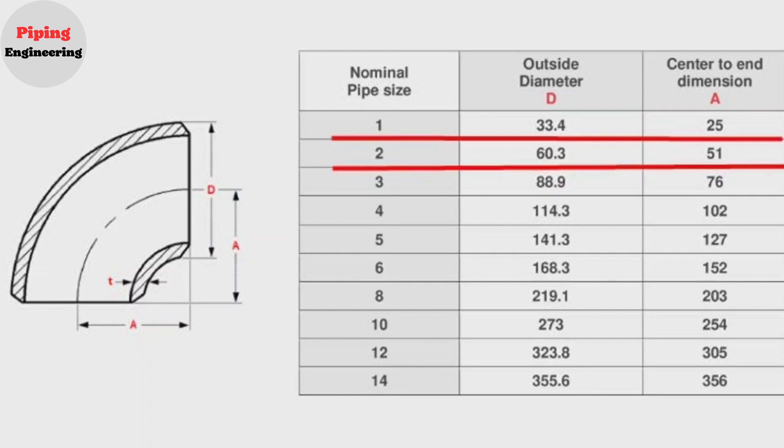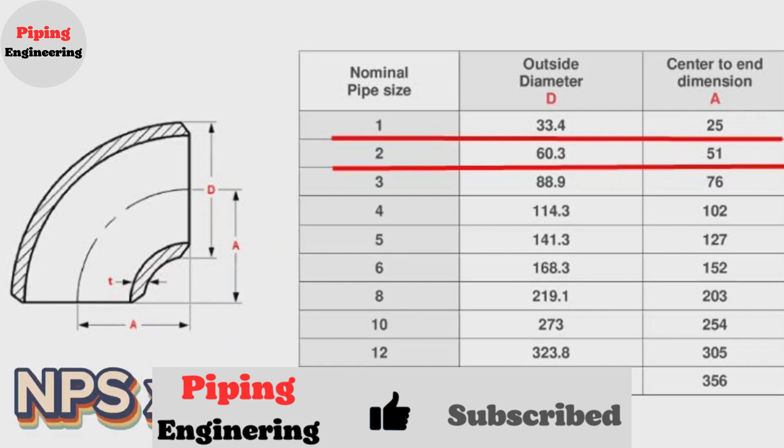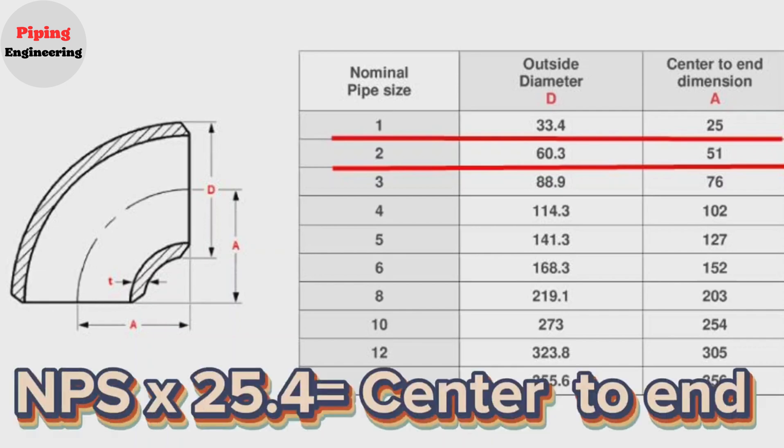Here we saw that to find the size of short radius elbows, need to multiply the nominal pipe size of the elbow by 25.4. So that NPS times 25.4 equals the size of the elbow.